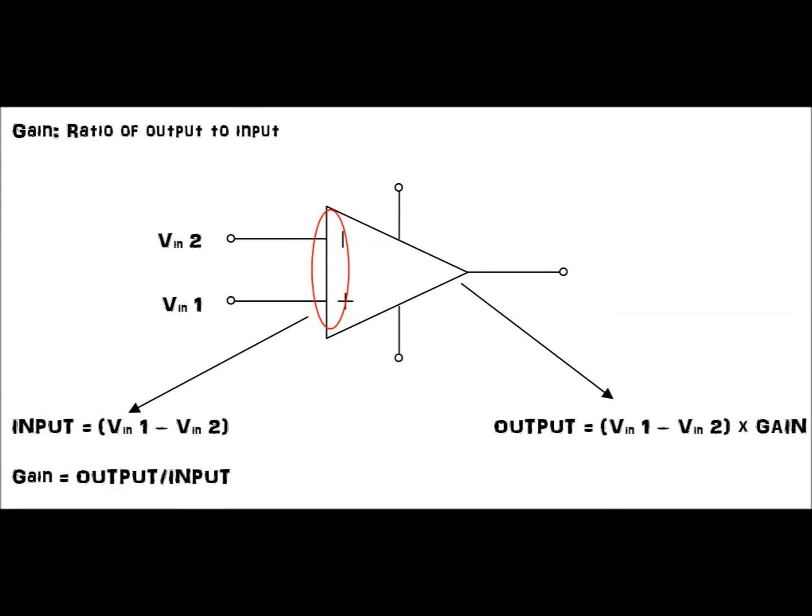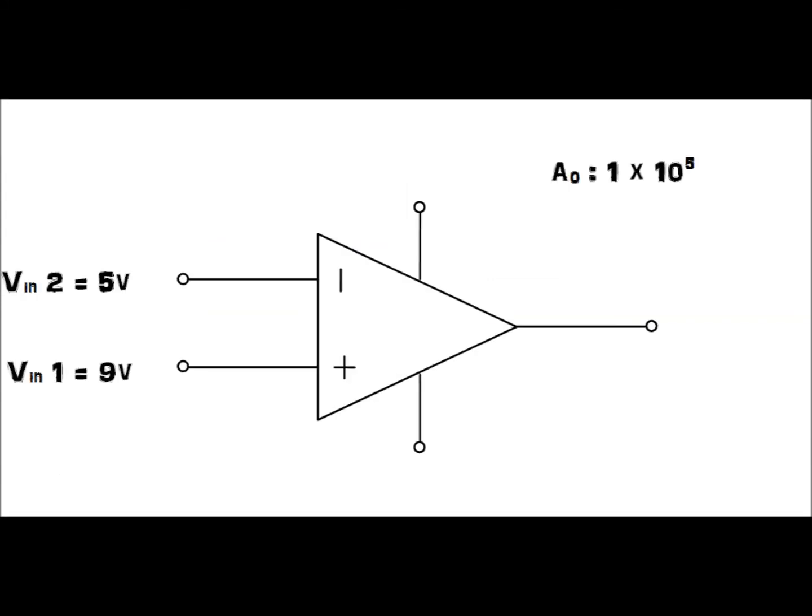Here is a worked example. Say we are asked to calculate the output voltage of this amplifier given the conditions. In this example, there is a voltage input of 9 and 5 volts at v-in1 and v-in2 respectively. The open-loop gain of the amplifier is 100,000.